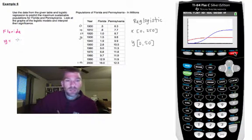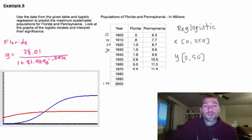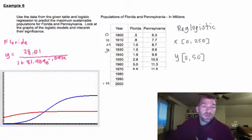Back to Florida. The regression model is going to be 28.01 over 1 plus 81.904 e to the negative .047x. Here's your regression model for Florida. What this is telling us is that there can be a maximum total of sustainable population in Florida of about 28 million people.